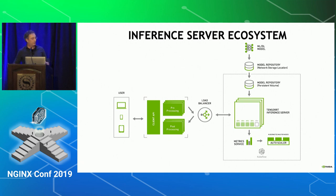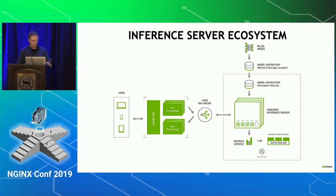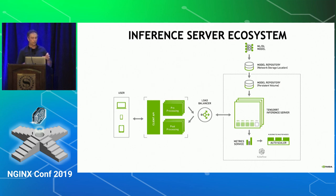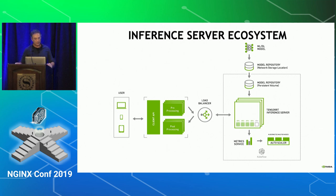Here is a zoom-out of where the TensorRT inference engine fits into the ecosystem. The dotted green box is the TensorRT inference server, and the rest is all ecosystem. You have clients on the left sending requests to the client API, some sort of pre-processing and post-processing — depending on the application, you may want to crop or mask the image. Then the request is sent to the load balancer, which forwards to TensorRT. The inference server also needs a model repository, a persistent volume where it can access the model definitions.